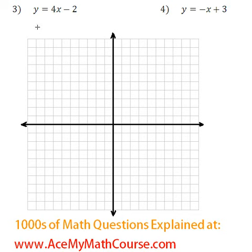Sketch the graph of the following linear functions, starting with 3, y equals 4x minus 2. Now remember that every time we have a function in this format, y equals mx plus b, m is the slope and b is the y-intercept.